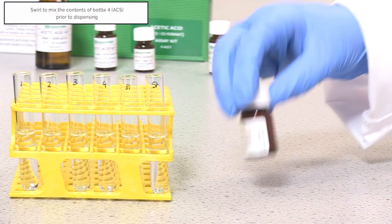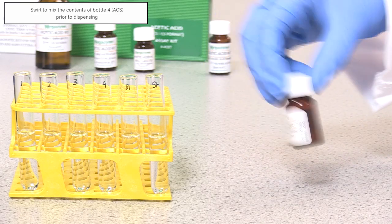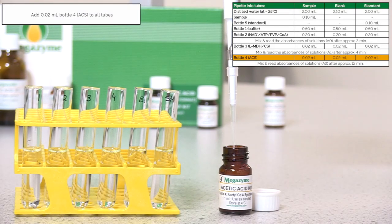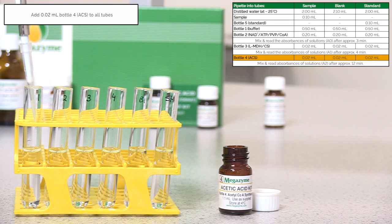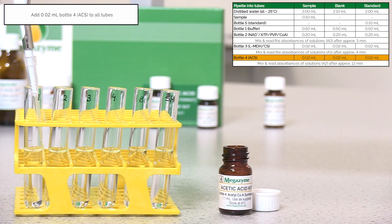Swirl to mix the contents of bottle 4, acetyl CoA synthetase, prior to dispensing. After recording the A1 absorbance value, pipette 20 µL of bottle 4 into all assay tubes.